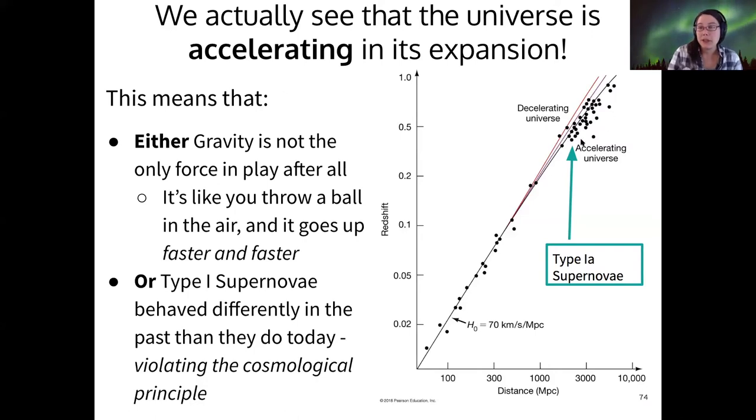Remember the other interpretation for why we might see a lot of supernovae at high red shifts that indicate that we have an accelerating universe, they could behave differently in the past. So maybe we don't know enough about the physics of type 1a supernovae. We don't think that that's most likely at this point, but if they did behave differently in the past than they do today, that would violate the cosmological principle. And so it would kind of blow all of our assumptions. So that would be a problem too.